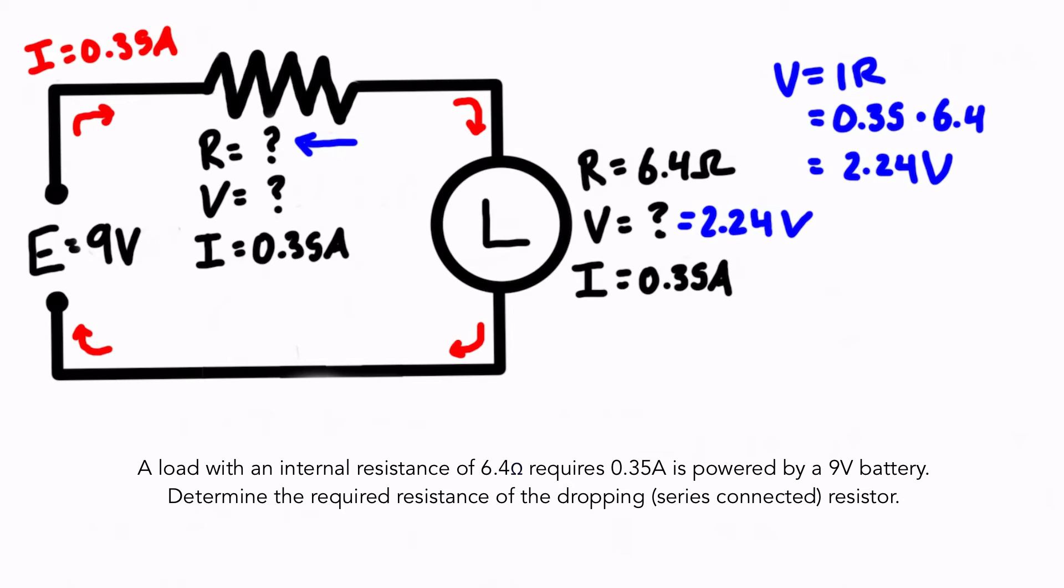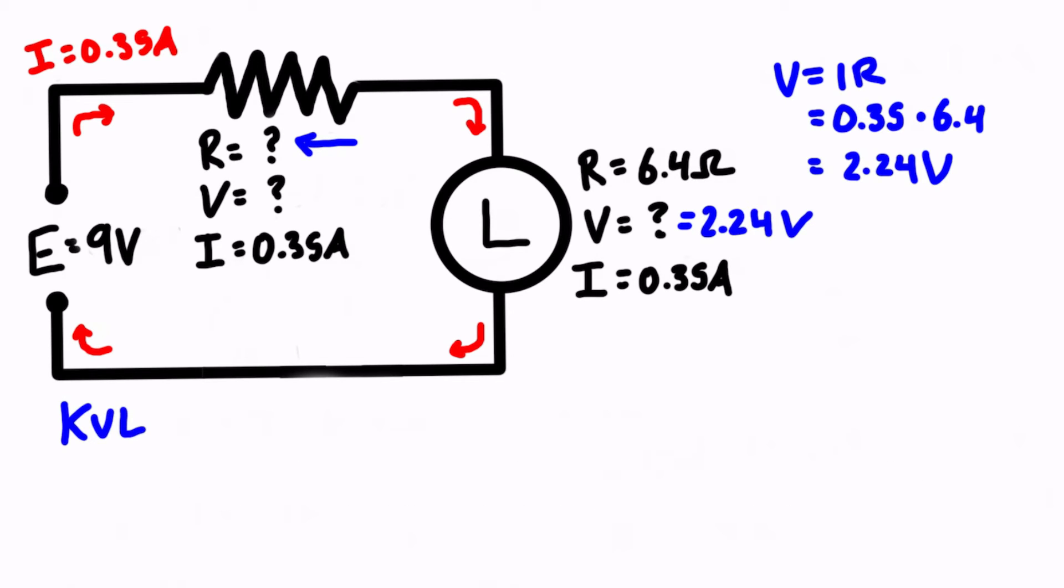All right, now we have only unknowns remaining at the dropping resistor. We can't solve for two unknowns using Ohm's law because that's too many unknowns. But what we can do is we can use KVL, which states that our supply voltage is going to equal the sum of the voltage drops. So we have a supply voltage of 9 volts, and then on the other side we have the voltage of the resistor plus the voltage of the load. So we have 9 volts equals the voltage of the resistor plus 2.24 volts. So the volt drop of the resistor is 9 minus 2.24, which is 6.76 volts.